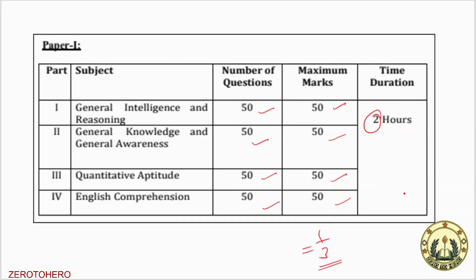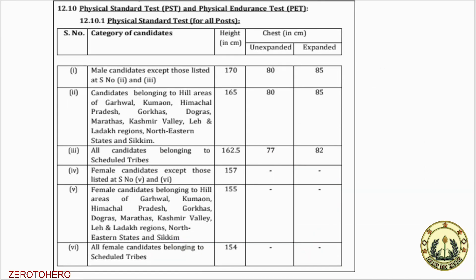This is the first level. If you want to clear this, you will have a Physical Standard Test and a Physical Endurance Test. This is the main one. If you want to see the physical standard test or physical endurance test details, let's talk about that information. If you have a physical standard test, this is a common question.